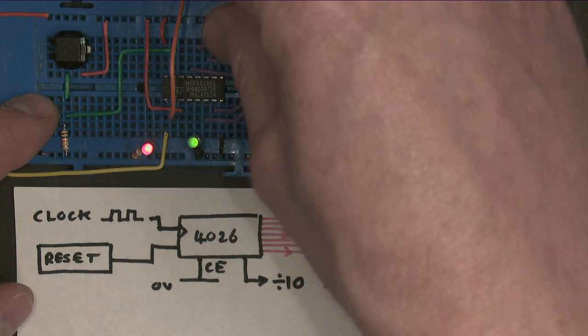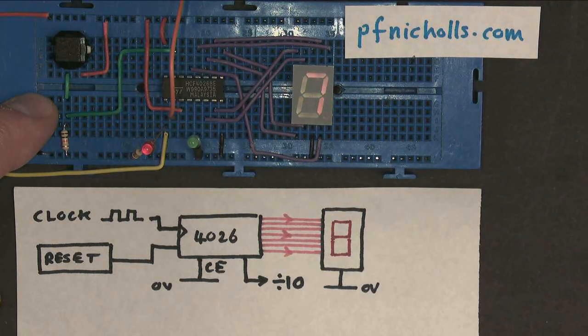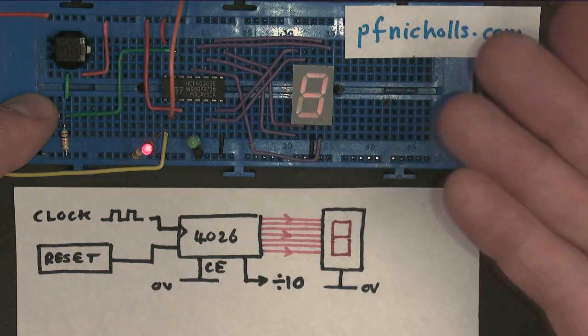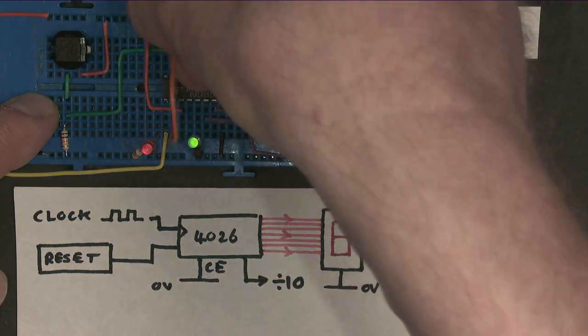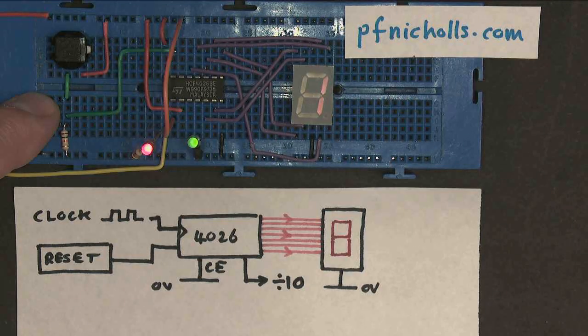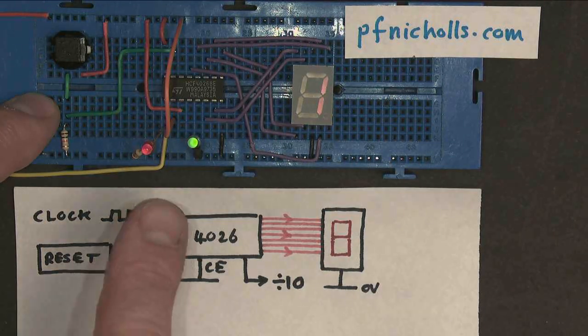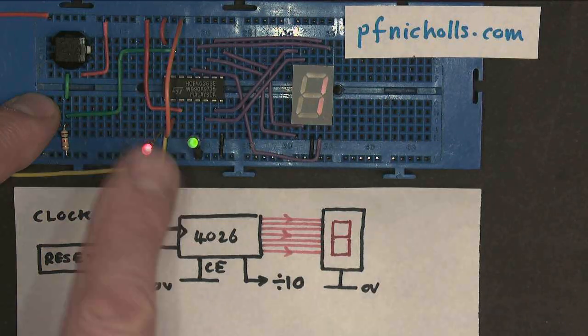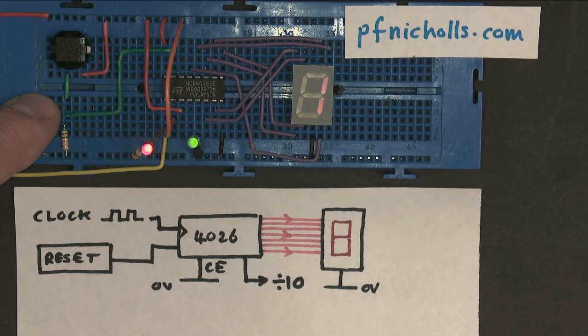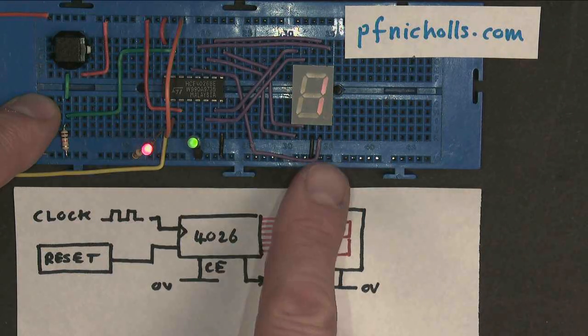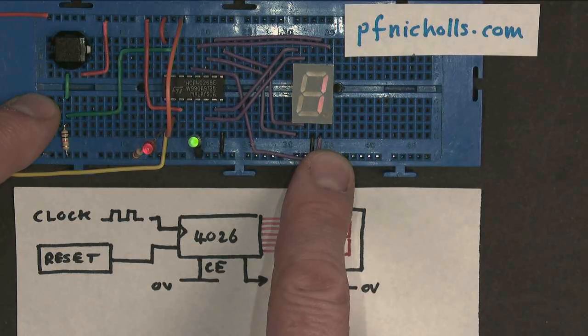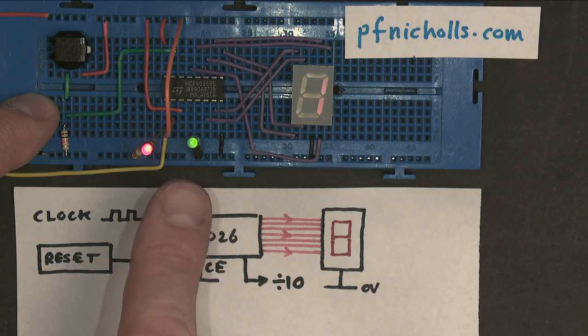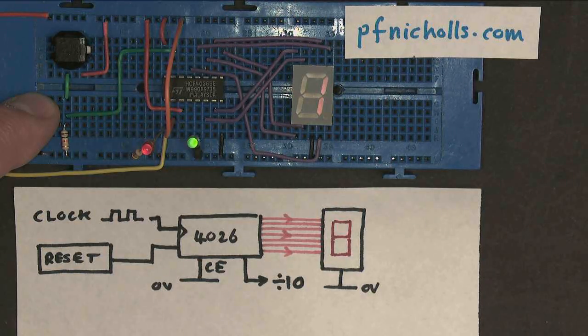And you'll notice that while it's not connected to anything in particular, the output is indetermined. This is part of CMOS circuits, the pins have to be connected to something. If I connect the clock enable to positive with this orange wire, then what happens is that the clock is now ignored. The counter display isn't changing, nor is the divide by 10 output. So the clock has effectively been inhibited.